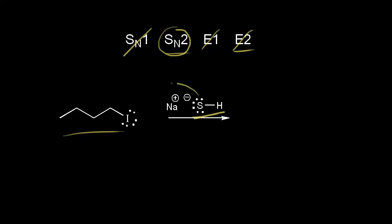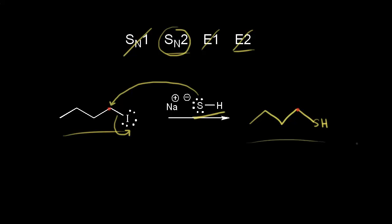Our nucleophile attacks our electrophile at the same time that we get loss of a leaving group. We're going to form a bond between the sulfur and this carbon here in red. At the same time, these electrons come off to form the iodide leaving group. So let's draw the final product: four carbons, then a bond to our sulfur which is bonded to a hydrogen. We don't have to worry about any stereochemistry here since we don't have any chiral centers.